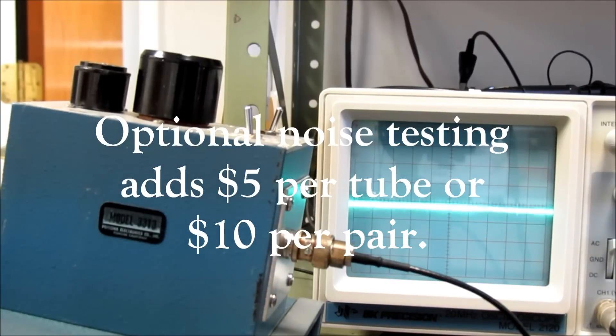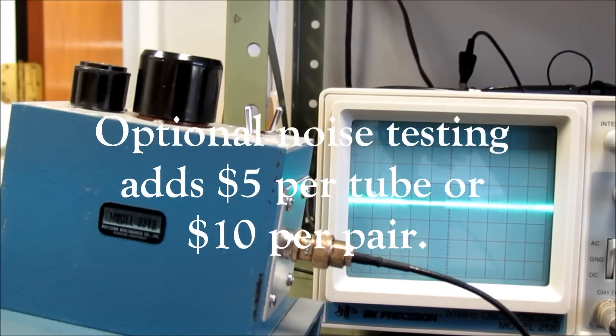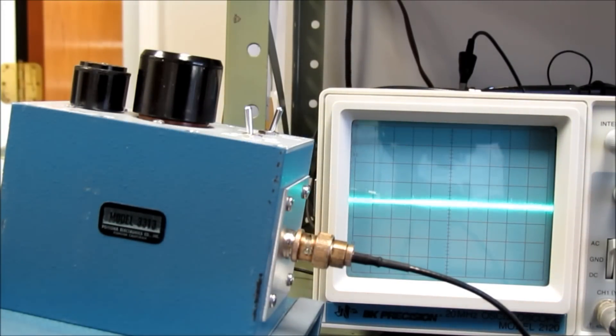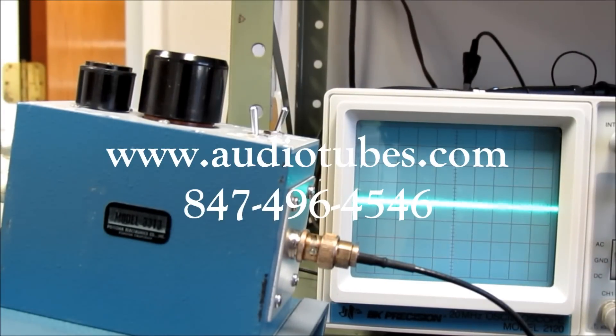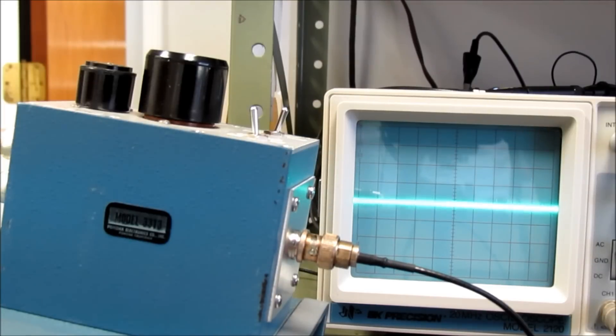So we'd like to be able to noise test tubes for you so you can be sure you get the absolute quietest 6922, 7308, or 6DJ8. Give us a call at 847-496-4546. We'd love to help you pick the quietest tubes for your application. Thank you.